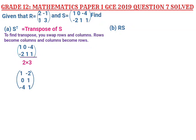As you can see, the result has 3 rows and 2 columns. To summarize: if you are asked to write the transpose of a given matrix, you just change the first row to become the first column, the second row to become the second column, and so on. That was the answer for question 7A.